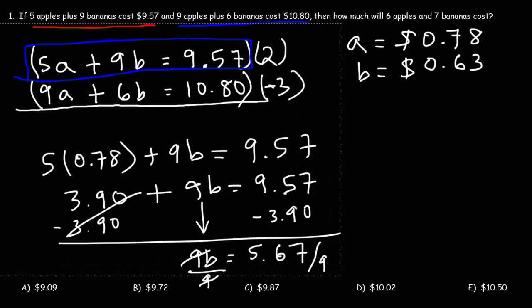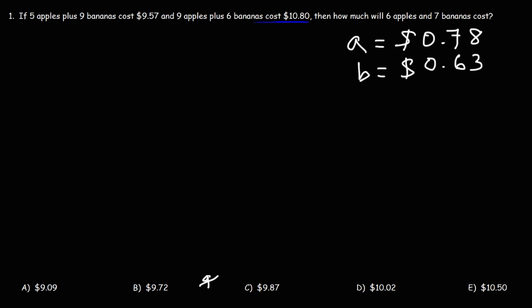So before we get the answer, let's make sure that the work we've done so far is correct. So let's make sure that 5 apples plus 9 bananas cost $9.57. This will tell us that this information is correct.